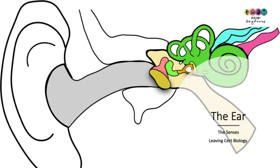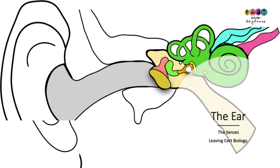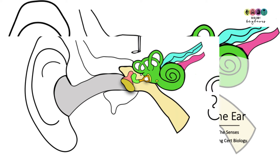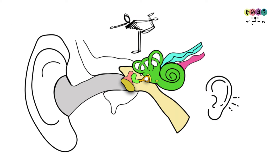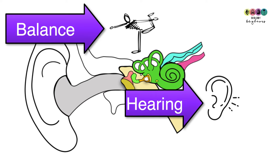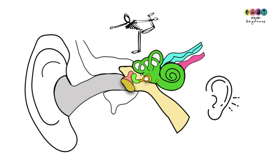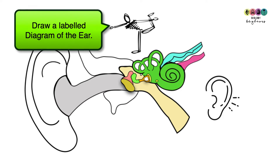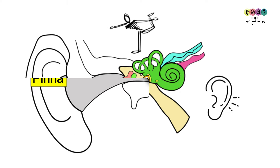This video is covering the ear. It's part of the chapter The Senses. The ear is the organ of balance and also of hearing, and to give an account of balance and hearing you need to know the detailed structure of the ear. The best place to start is to draw the ear and label it.